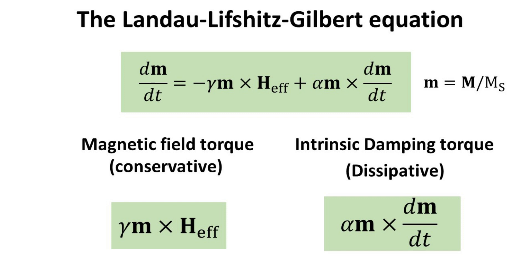In summary, the Landau-Lifshitz-Gilbert equation captures the interplay between the conservative torque, which aligns the magnetization with the external field, and the dissipative torque, which accounts for energy dissipation and the attainment of a stable magnetization state. This equation is essential in understanding the dynamics of magnetization and has wide-ranging applications in areas such as spintronics, magnetic recording, and magnetic resonance imaging.